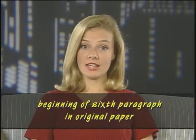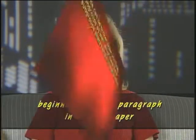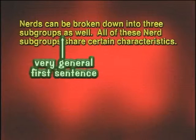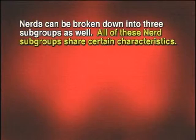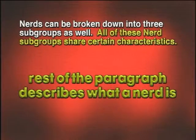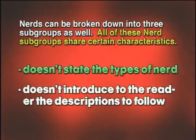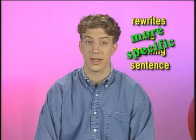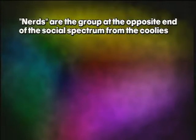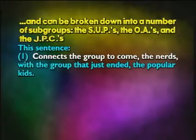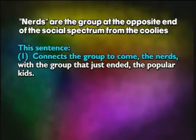Sam's next comment is at the beginning of the sixth paragraph in his original paper — Sam marks that his first sentence at the beginning of the nerd section is too general. Nathan goes back and rewrites his opening sentence to make it more specific. Here's what it looks like: 'Nerds are the group at the opposite end of the social spectrum from the coolies, and can be broken down into three subgroups: the SUPs, the OAs, and the JPCs.' This new sentence does two things: first, it connects the group to come — the nerds — with the group that just ended — the popular kids — by saying that nerds are at the opposite end of the social spectrum.